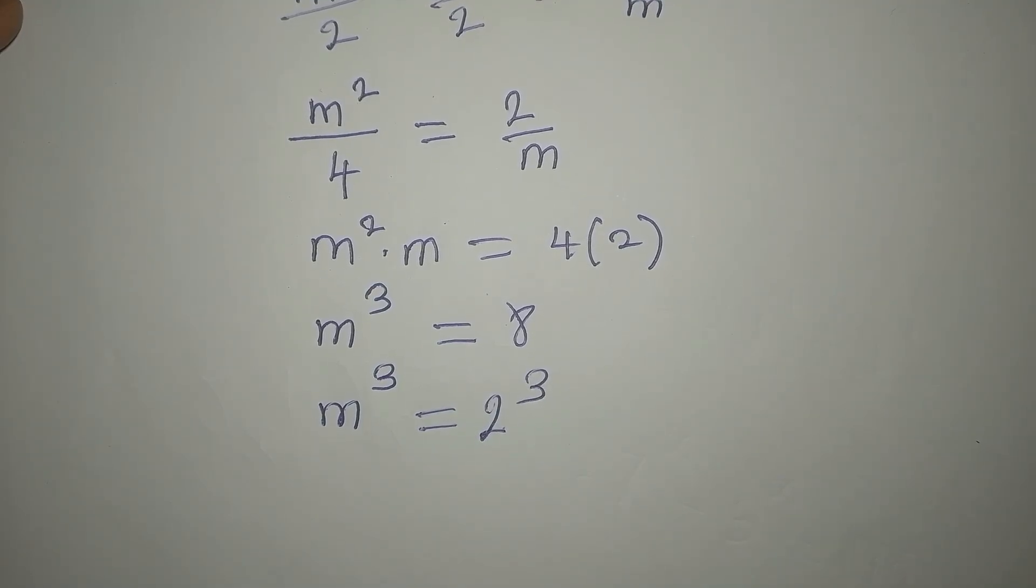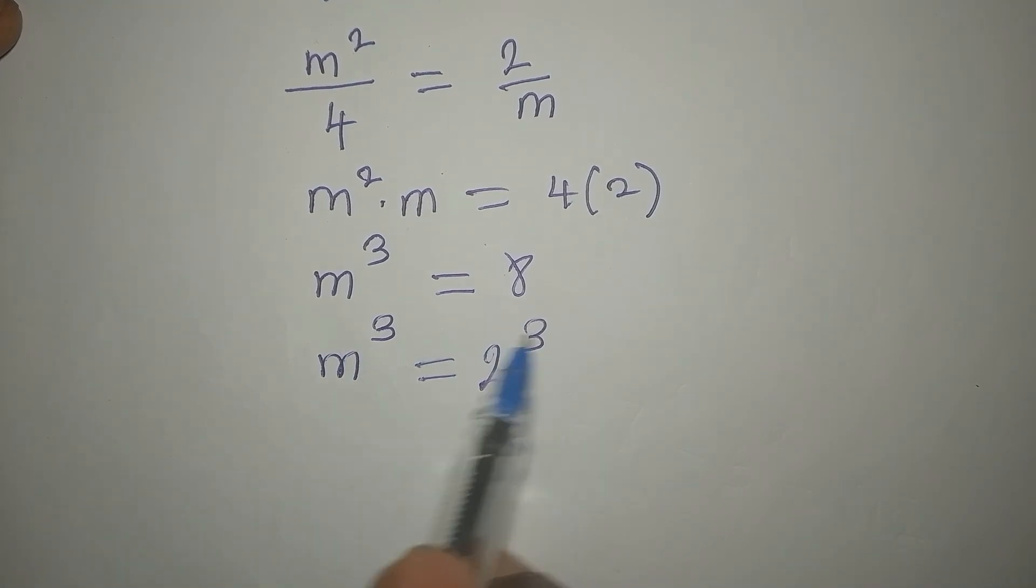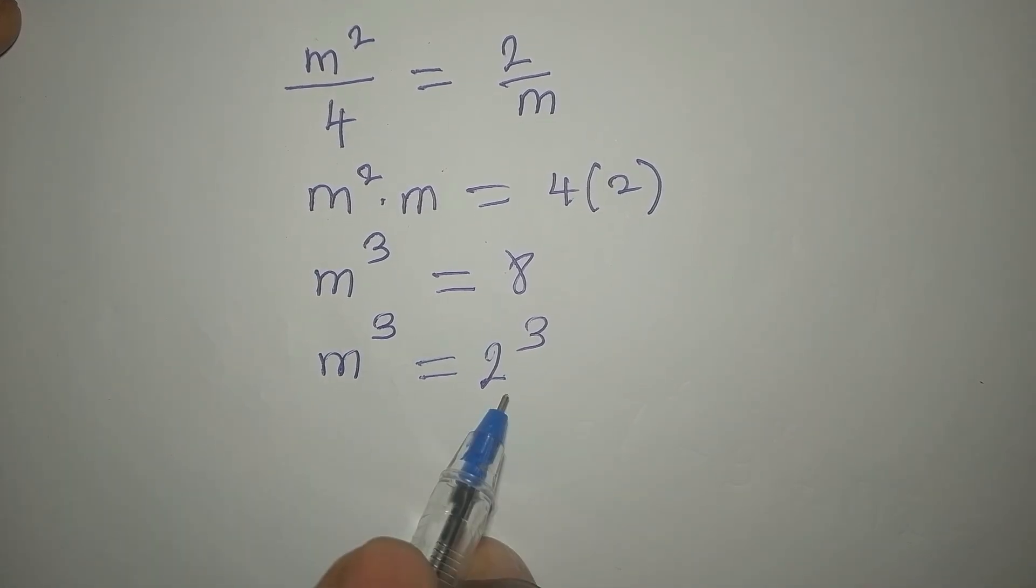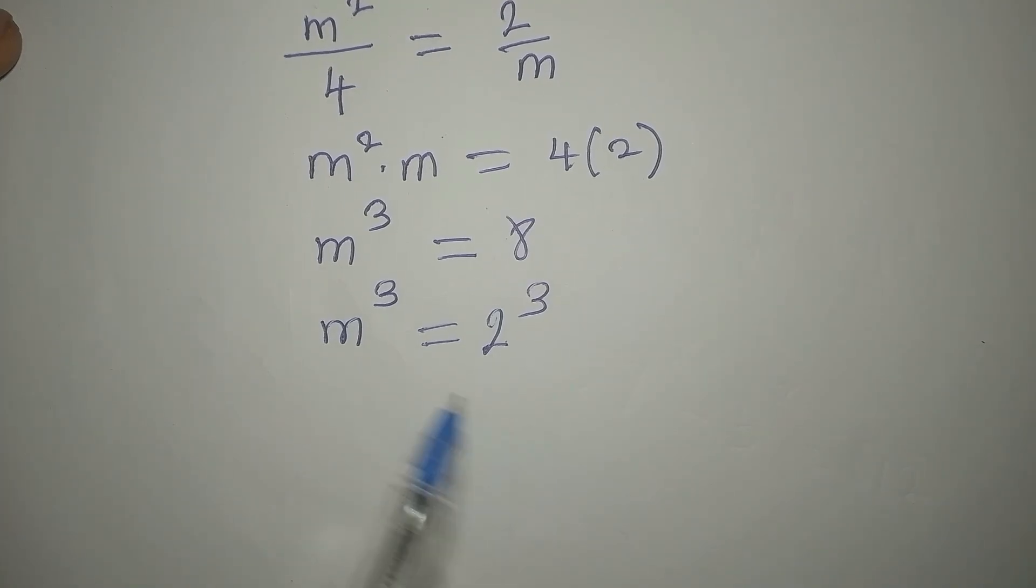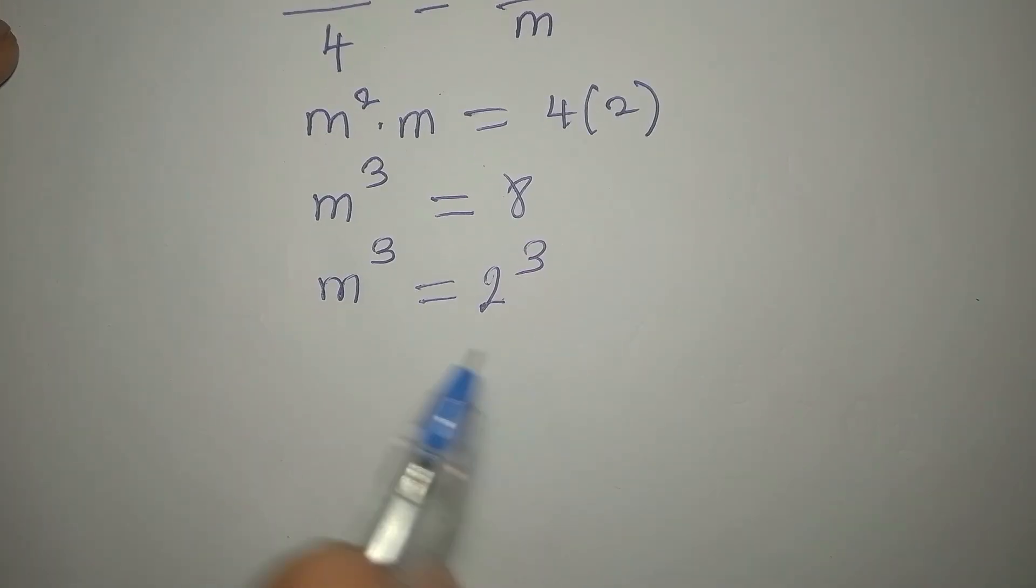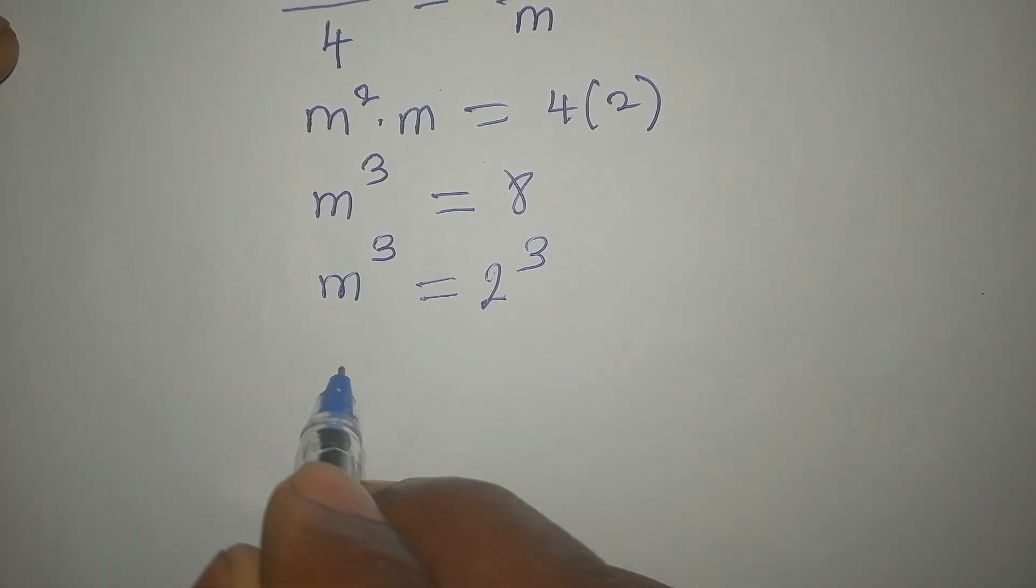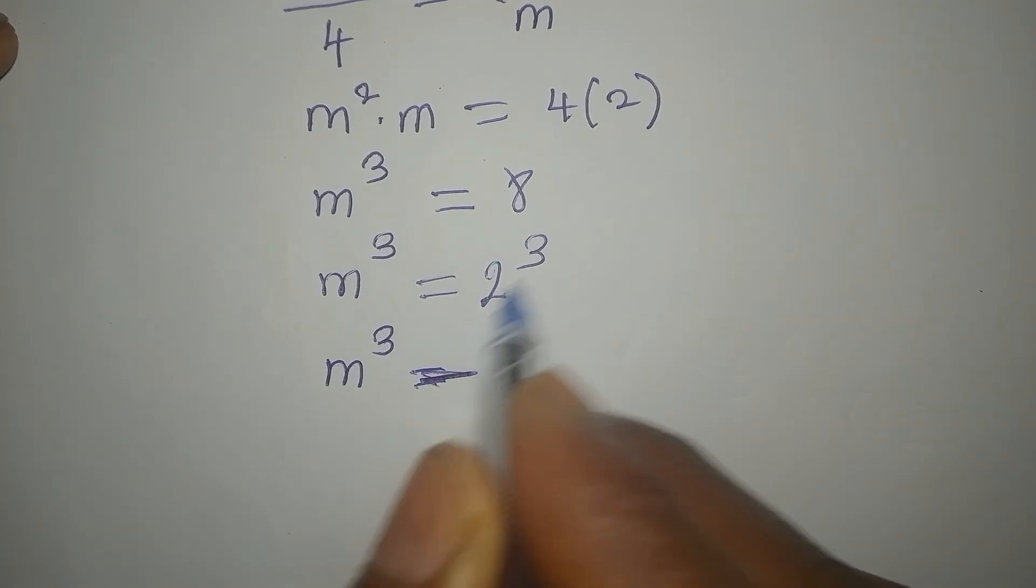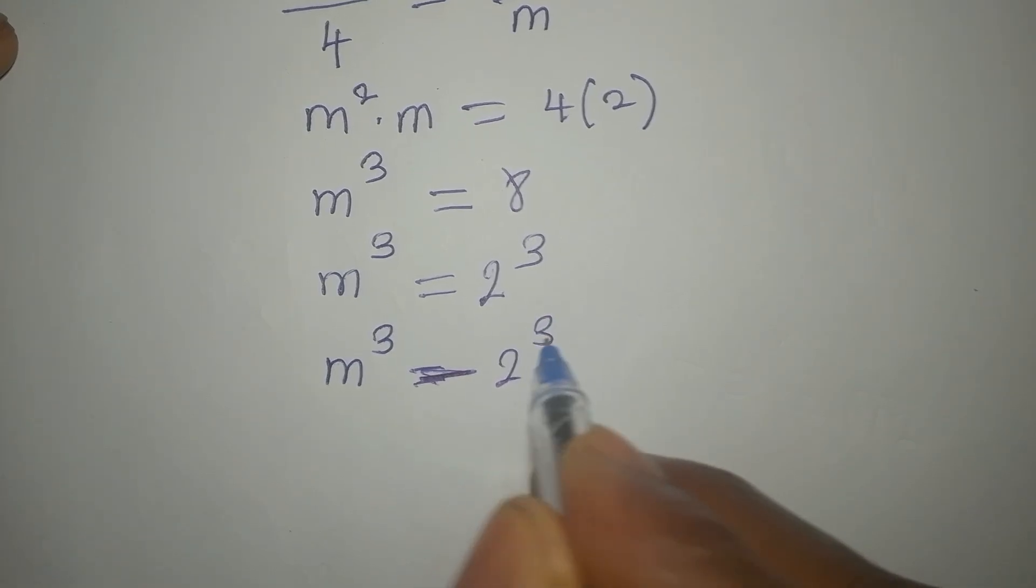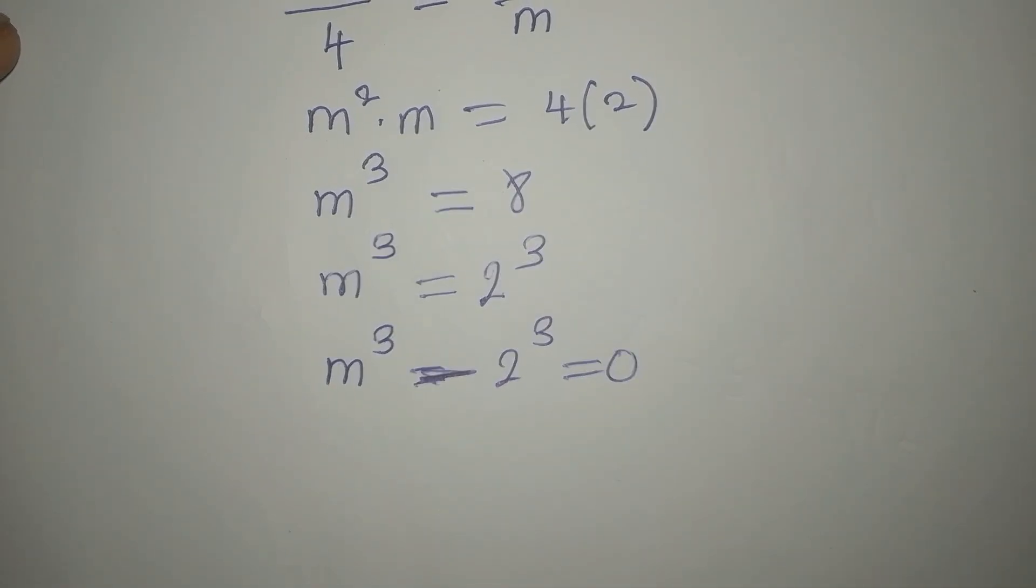So that means it's easier for us now. But if we equate the bases, m will be 2. And that will be the only solution. But we need more than one solution. So let's bring this to the left. m to the power of 3 will now be minus. This will be 2 to the power of 3. And everything is 0.